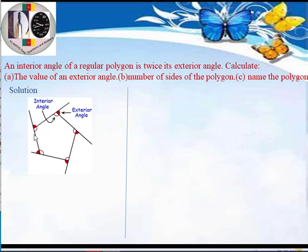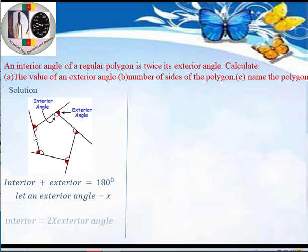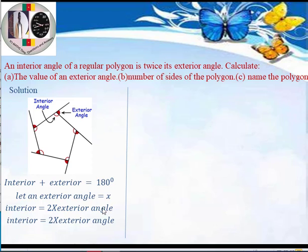With all this in mind, we are ready for the question. The question says an interior angle of a regular polygon is twice its exterior angle. Let's assume the exterior angle is x. Then the interior angle is twice the exterior angle, so the interior angle equals 2x.